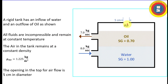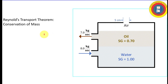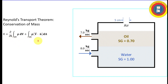The opening in the top of the tank is five centimeters. Now, Reynolds Transport Theorem conservation of mass — here's the equation. The left-hand side states that mass is conserved. The first term on the right-hand side is the time rate of change of mass inside the control volume, and the second integral is the net outflow of mass from the control volume.